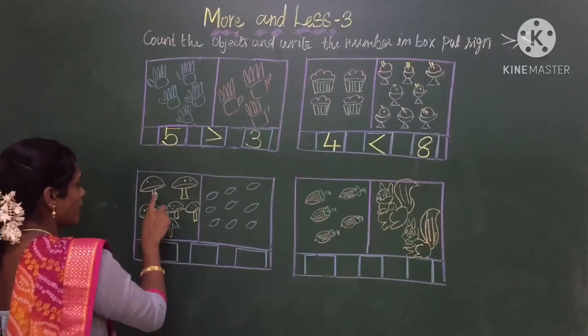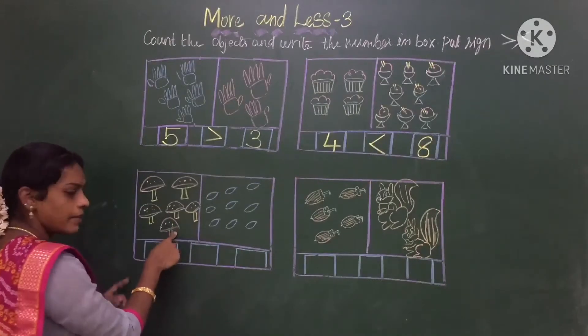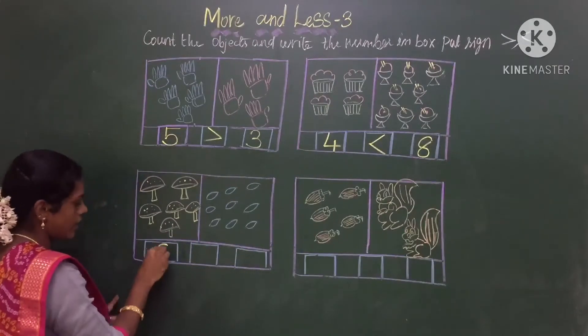Now let us count the mushroom: 1, 2, 3, 4, 5, 6. How many mushrooms? 6. So we have to write in the box 6.